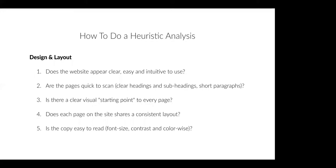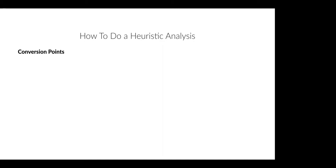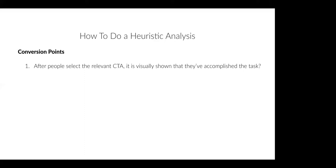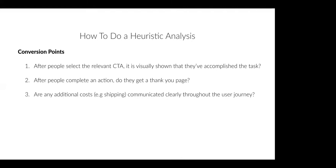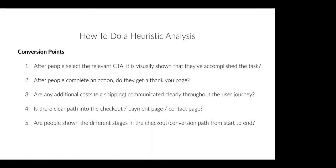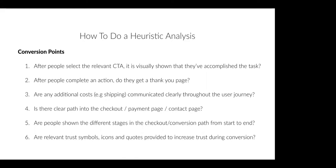Lastly, we'll be looking at conversion points — those pages that people convert on. Ask yourself: After people select a relevant CTA, is it visually shown that they've accomplished the task? After people complete an action, do they get a thank you page? Are any additional costs like shipping communicated clearly throughout the user journey? Is there a clear path into checkout, the payment page, or contact page? Are people shown the different stages in the checkout from start to end? And are relevant trust symbols, icons, and quotes provided to increase trust during the conversion?